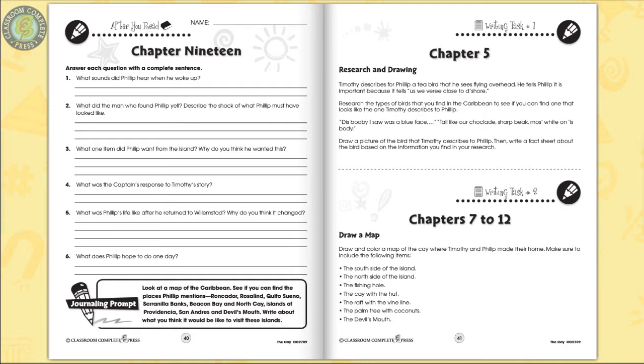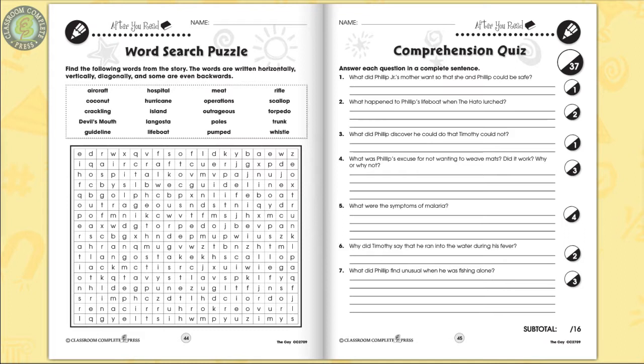Using the description Timothy provides to Philip, research the T-bird and draw a picture of it along with a fact sheet. A word search puzzle and comprehension quiz ends the unit.